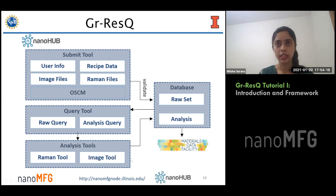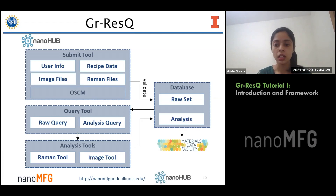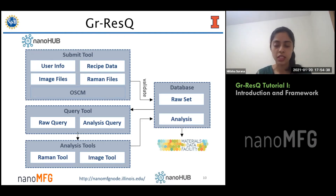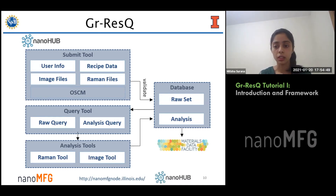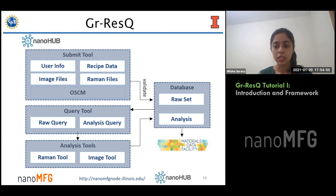Once the database is updated, recipes are available for query. Using the query tool, a user can search for specific synthesis recipes or recipes with specific parameters — it acts like a search engine with filters and sort mechanisms. Users can also query based on SEM and Raman spectroscopy results, apply machine learning models to recipe parameters, study characterization data, and access statistical models with the analysis tools.